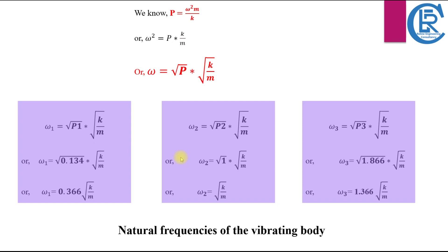By solving for different values of p we unlock different values for the natural frequency omega. Inputting the different values of p into the equation, we get the values of omega as 0.366√(k/m), 1√(k/m), and 1.366√(k/m). These correspond to the three distinct values of p obtained previously.